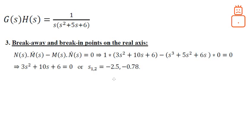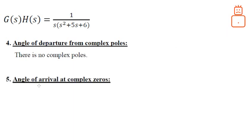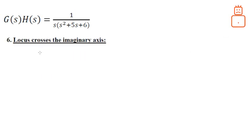Before drawing, we check the angle of departure from complex poles — since we have no complex poles, we skip this step. Similarly, the angle of arrival at complex zeros is not needed since we have no complex zeros. The final step is to find where the locus crosses the imaginary axis, which is done using the characteristic equation.